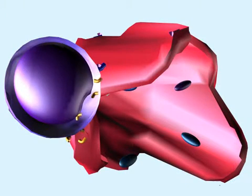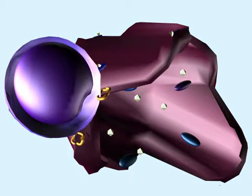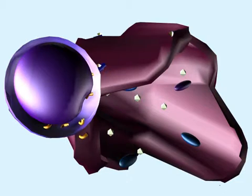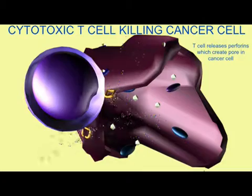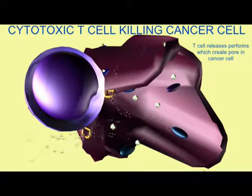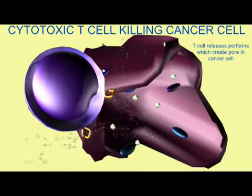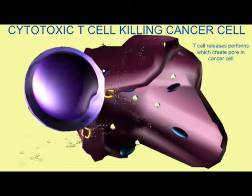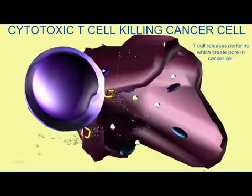Cytotoxic T-cells can then secrete perforins. These perforins will assemble on the cell membrane of the cancer cell or the virally infected cell, where they will form a pore, which will let water in, potentially bursting the cell, and alter the cell's ability to control ion concentrations. This will kill the cell.